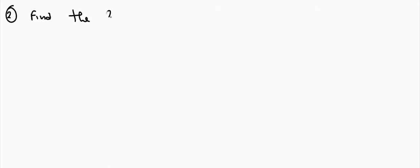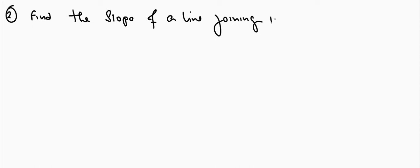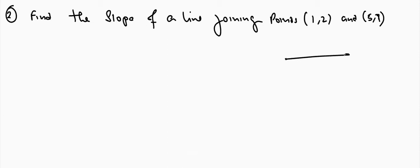Problem number two: find the slope of a line joining two points. We are given the points (1, 2) and (5, 7). Here, (1, 2) is (x1, y1) and (5, 7) is (x2, y2).